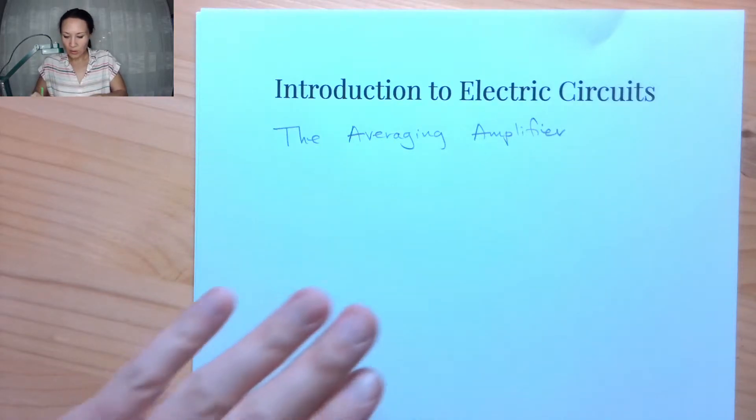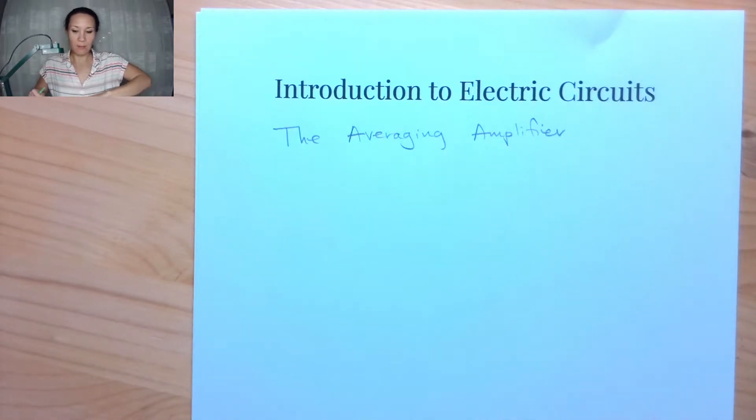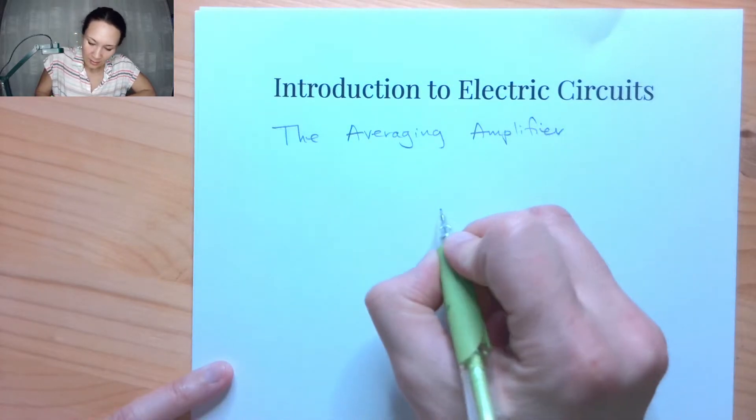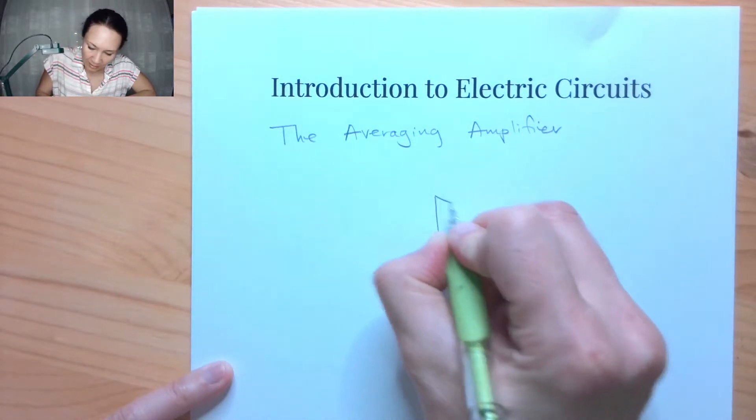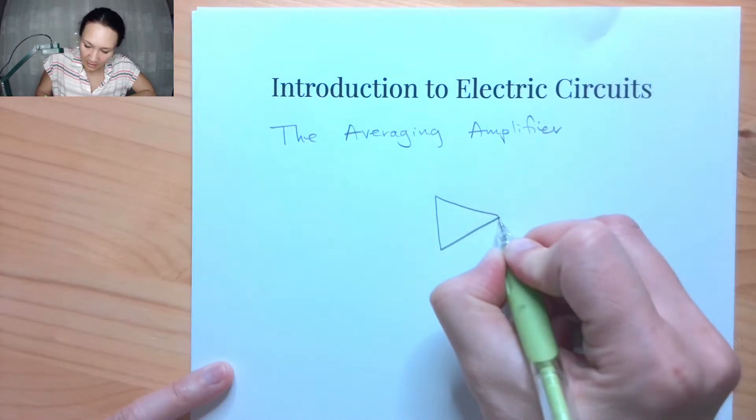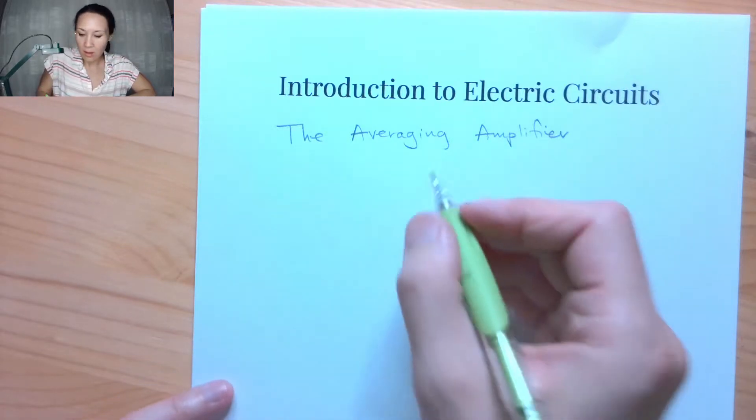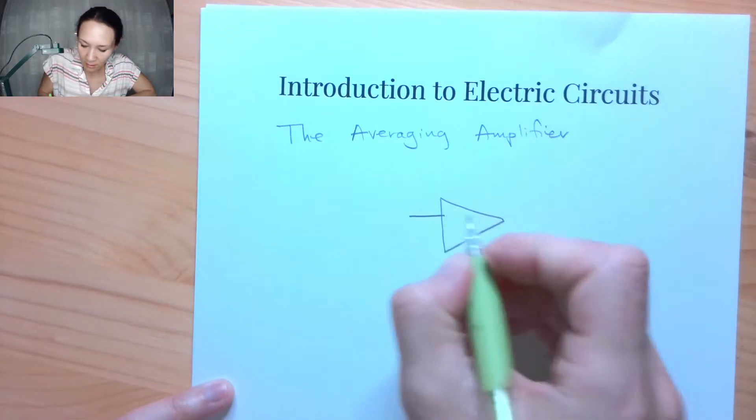Hi students, so now I'm going to show you how we can use an op amp to take the average of some input voltages. The averaging amplifier is actually a summing amplifier where the gain is going to be 1 over the number of voltage sources that we are summing.